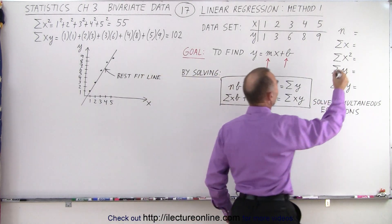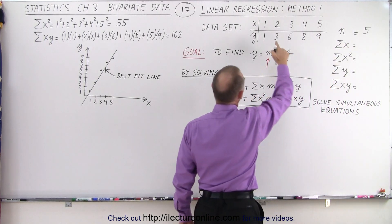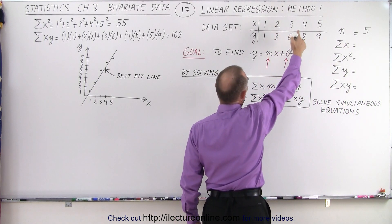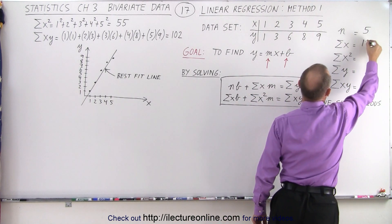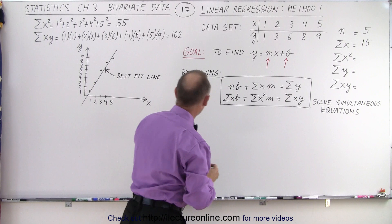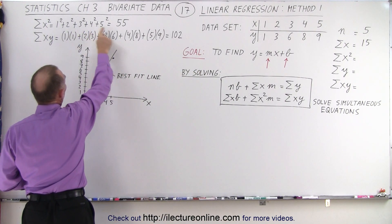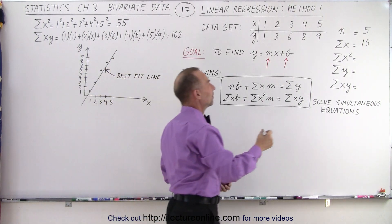First, the number of data points. There's five data points. The sum of all the x values, 1 plus 2 plus 3 plus 4 plus 5, that's equal to 15. The sum of all the x values squared, well, I already worked that out over here. So we take each x value, we square it, we sum it all up, and we get 55.